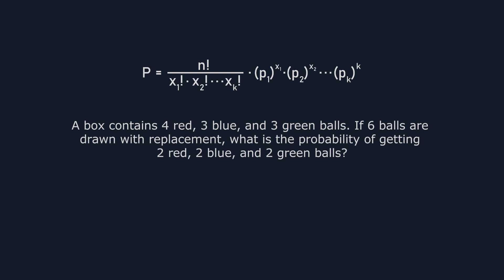In our problem, the total number of trials, n, is 6, since we're drawing 6 balls. The count of red balls, denoted as x1, is 2. The count of blue balls, x2, is also 2. And lastly, the count of green balls, x3, is 2.